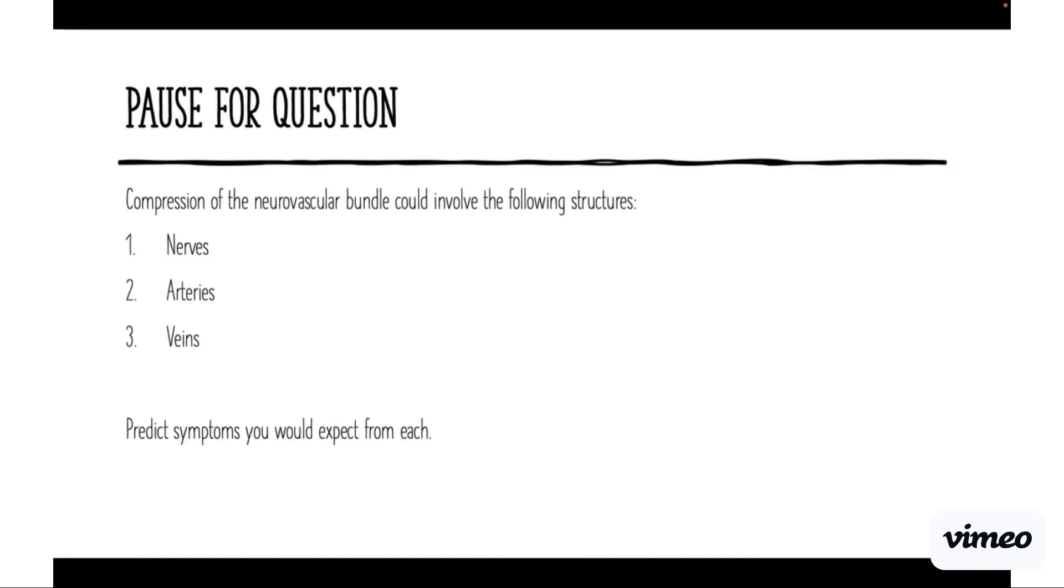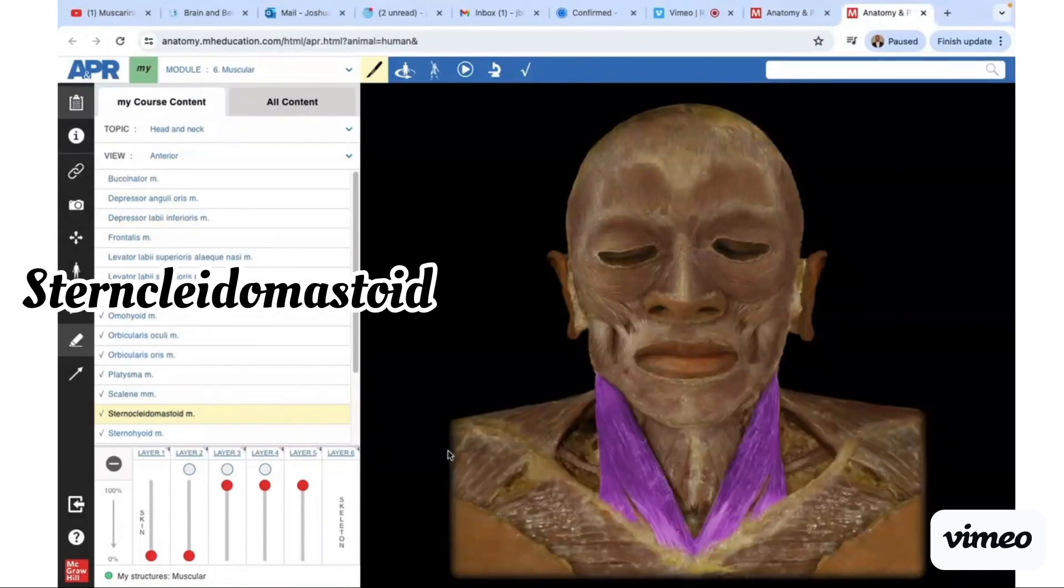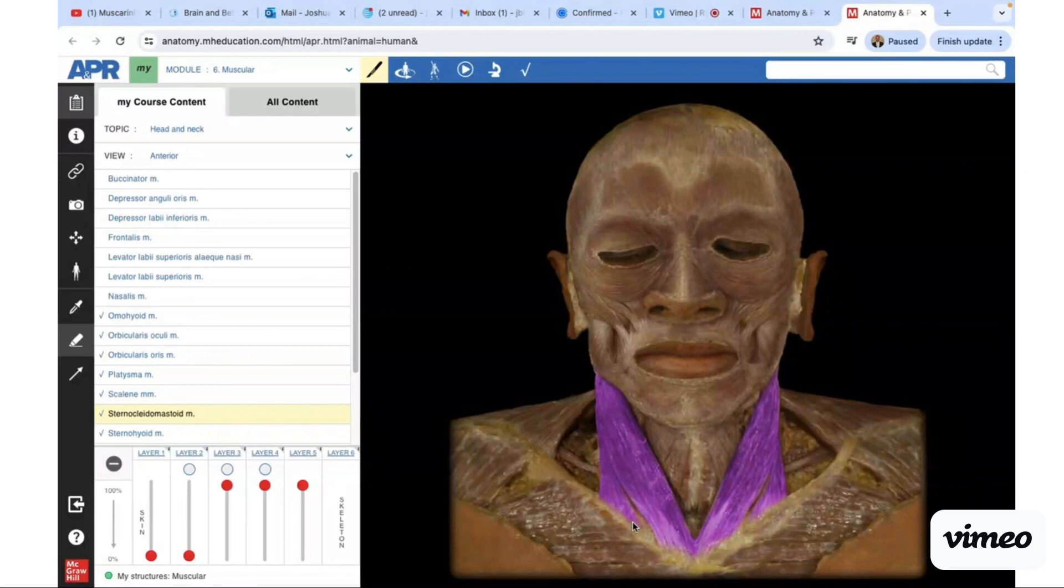Let's move over to the virtual dissection. If we remove the skin from the anterior neck, we have the platysma muscle. It's a really thin muscle—it's so thin that if you feel over your clavicle, it just feels like skin and bone, but that thin muscle is actually in there. Let's get rid of that and look at the sternocleidomastoid.